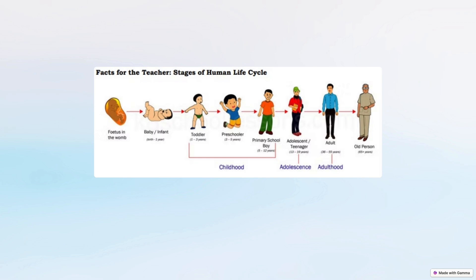Here we can see the stages of the human life cycle: from the fetus in the womb, to being a baby or infant after birth. Childhood is divided into three stages — toddler, preschooler, and primary school. Then comes the teenager or adolescence stage, followed by adulthood, and finally old age.